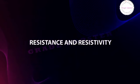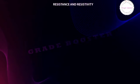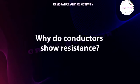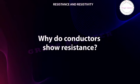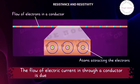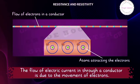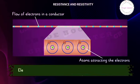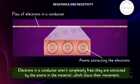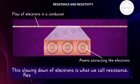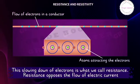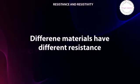Resistance and resistivity: conductors show resistance because the flow of electric current through a conductor is due to the movement of electrons. Electrons in a conductor are not completely free — they are attracted by the atoms in the material, which slows down their movement. This slowing down of electrons is what we call resistance. Resistance opposes the flow of electric current, and different materials have different resistance.